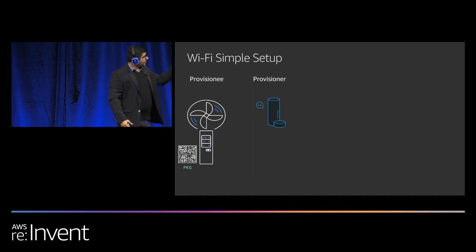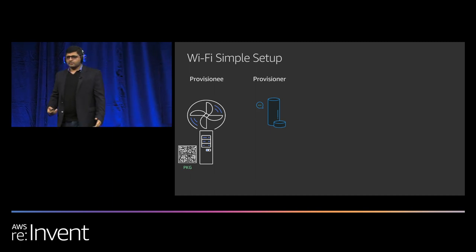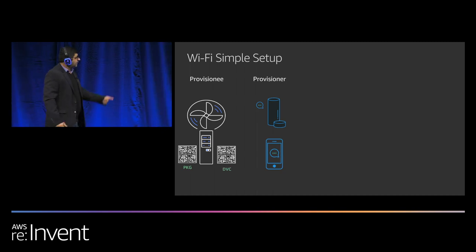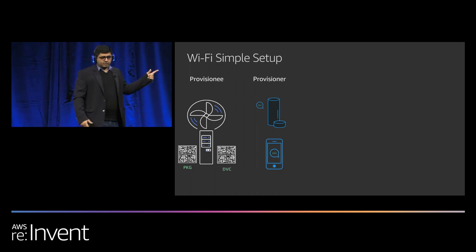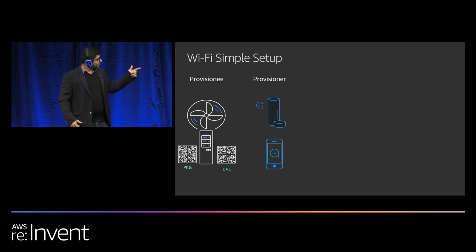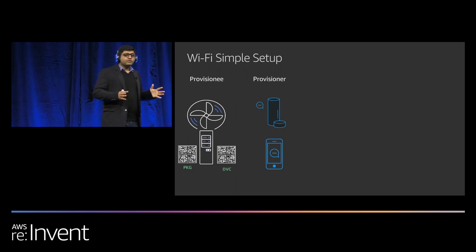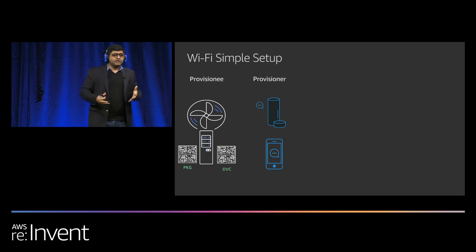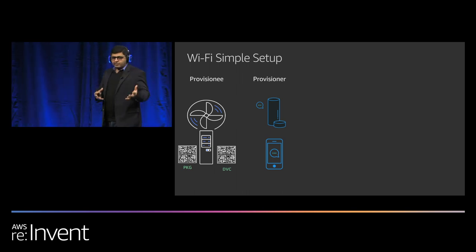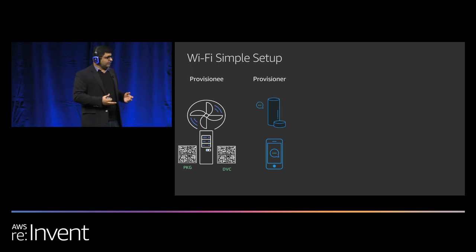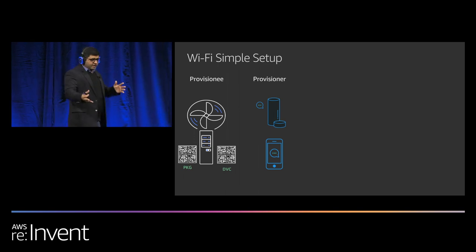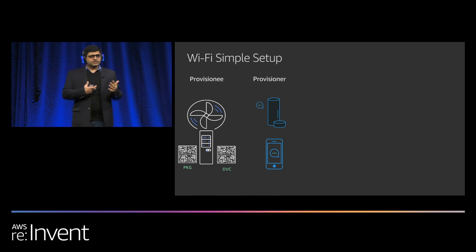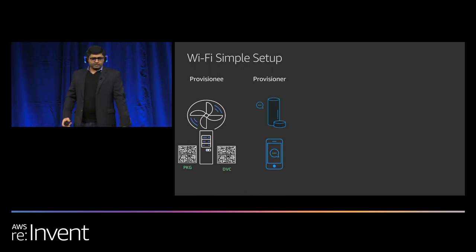If you don't have an Echo device, you can use the packaging barcode — it's scanned at the fulfillment center and does the account linking for you. If you didn't buy it from Amazon.com, or you gave it to a friend, you can still use the device barcode to achieve account linking and all the other setup steps.